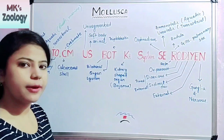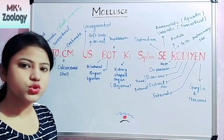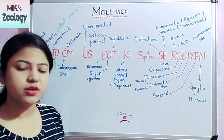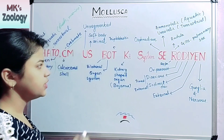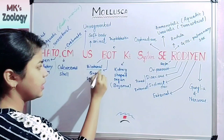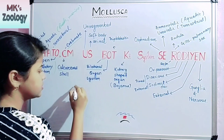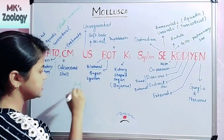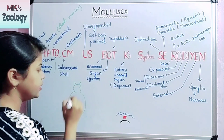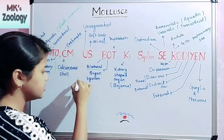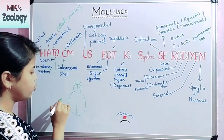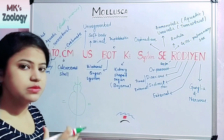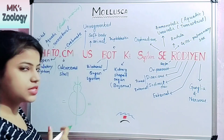The next word in the trick is BOT. B means bilateral — meaning if we cut the animal in this direction, both halves are equal. This is known as bilaterally symmetrical.